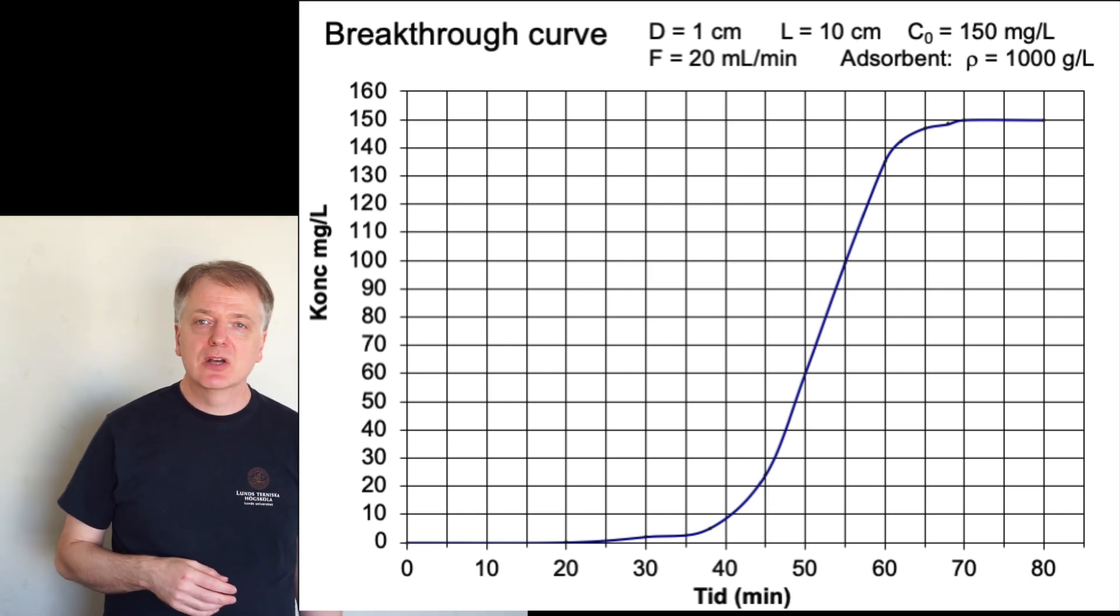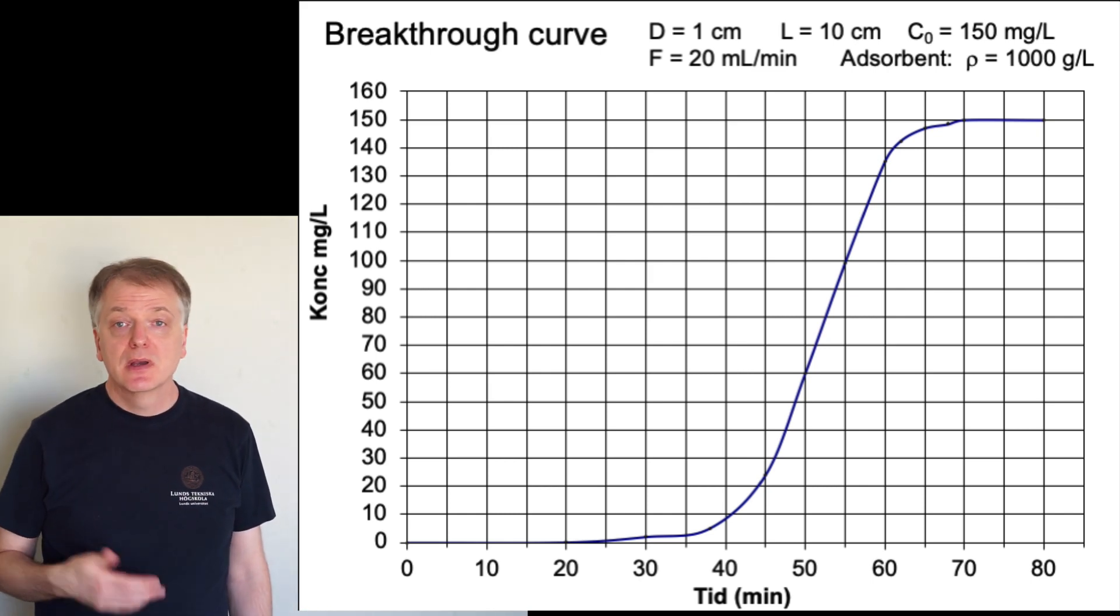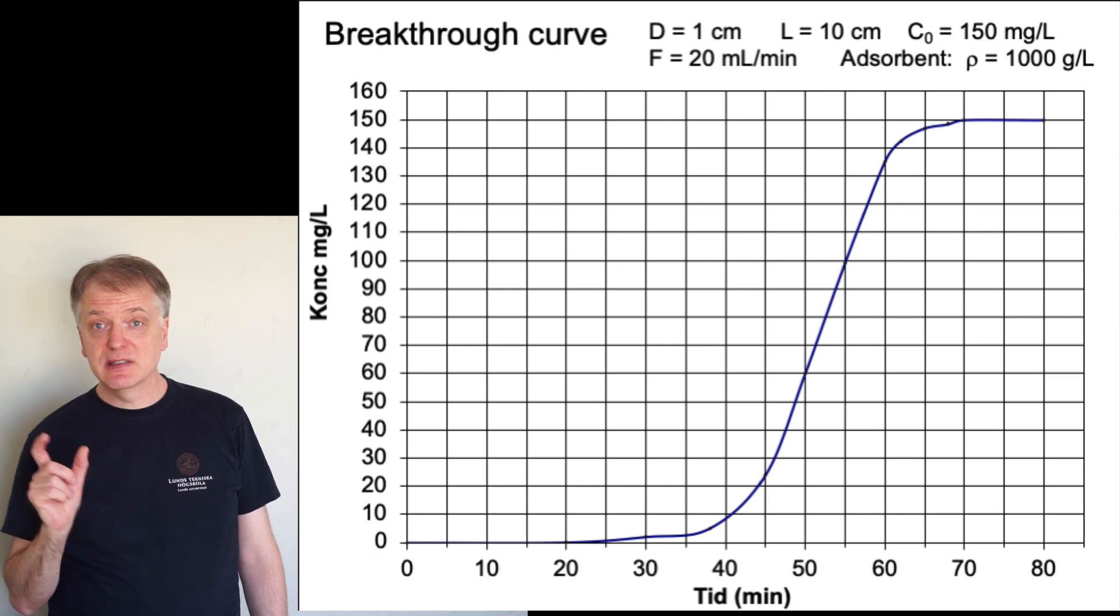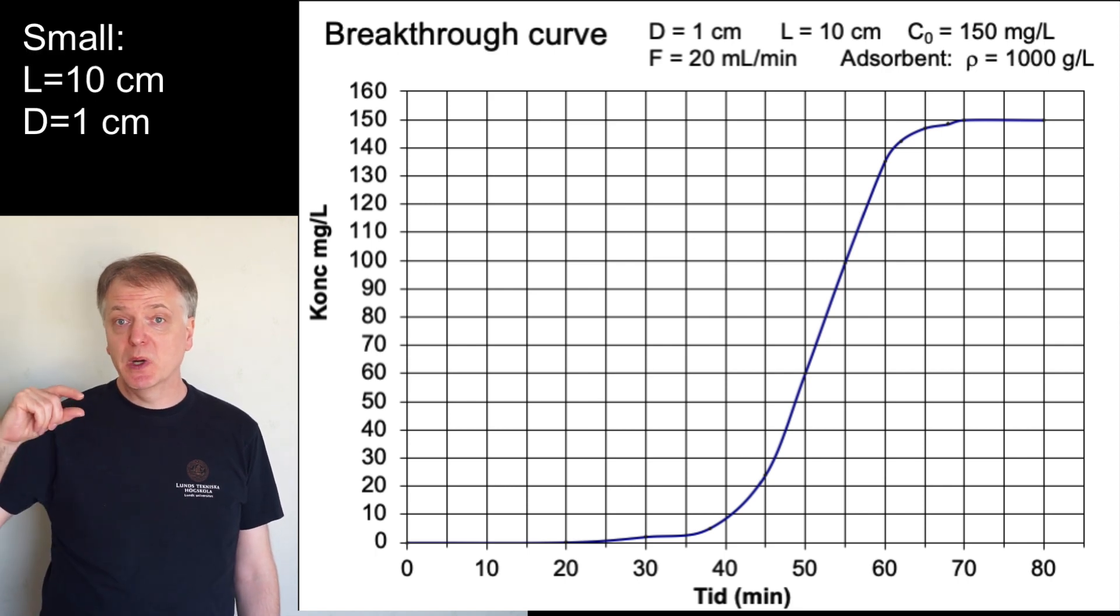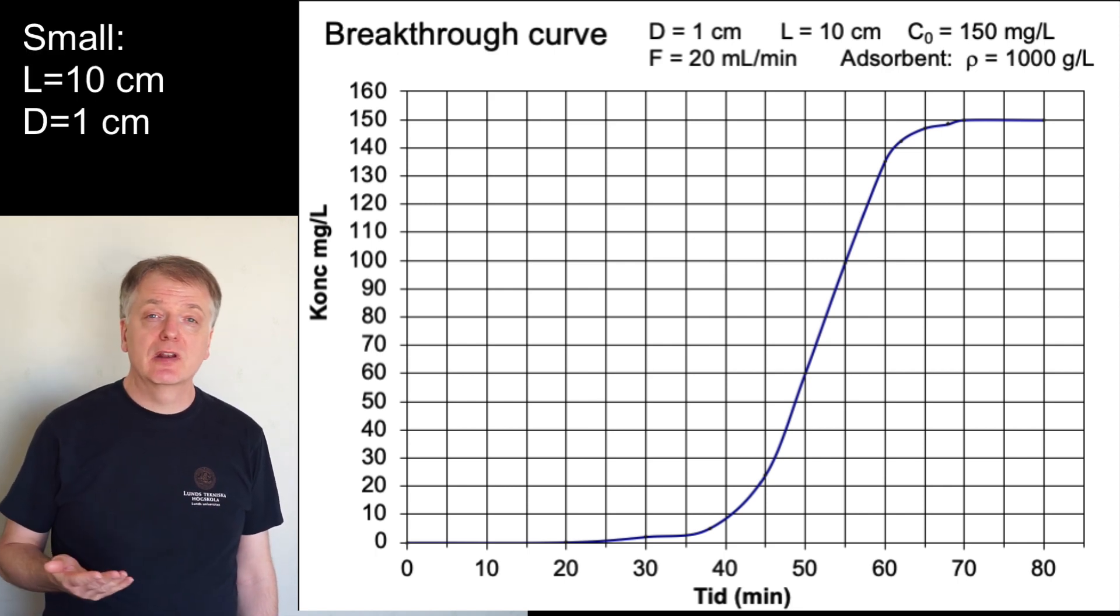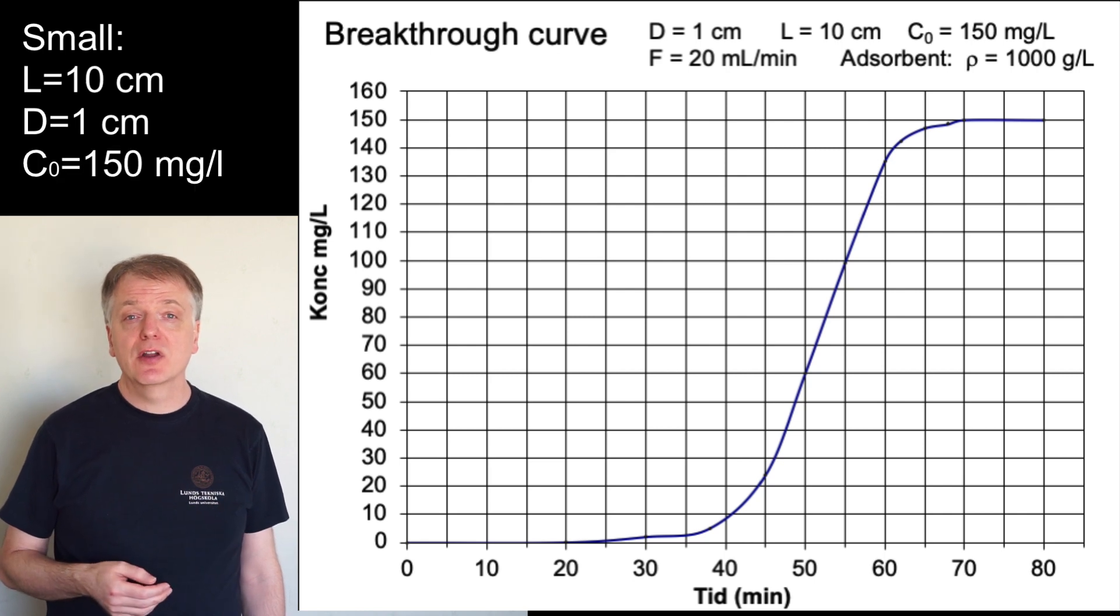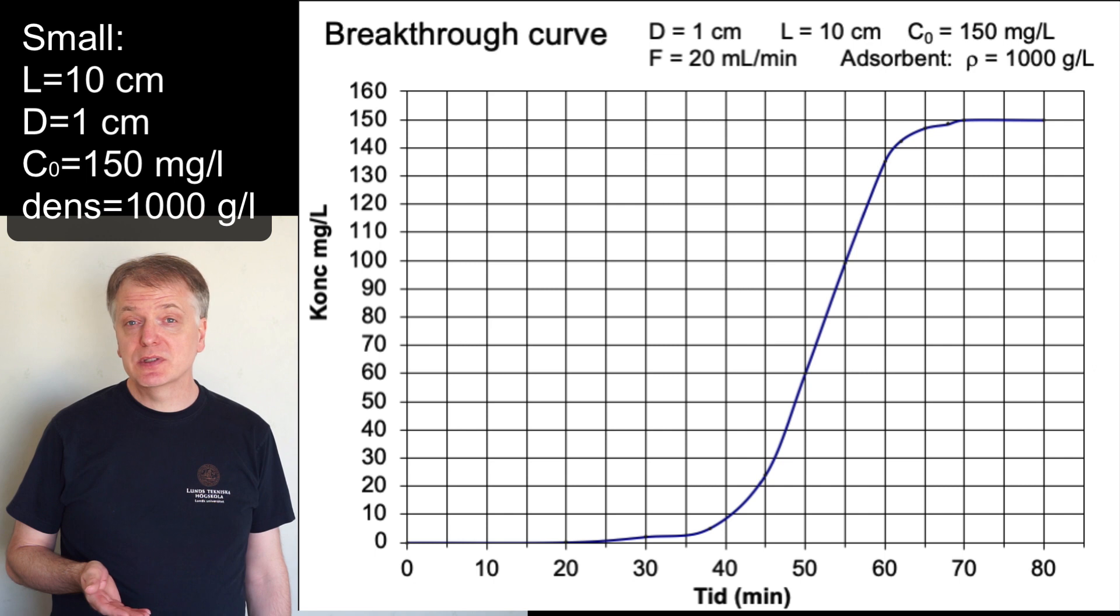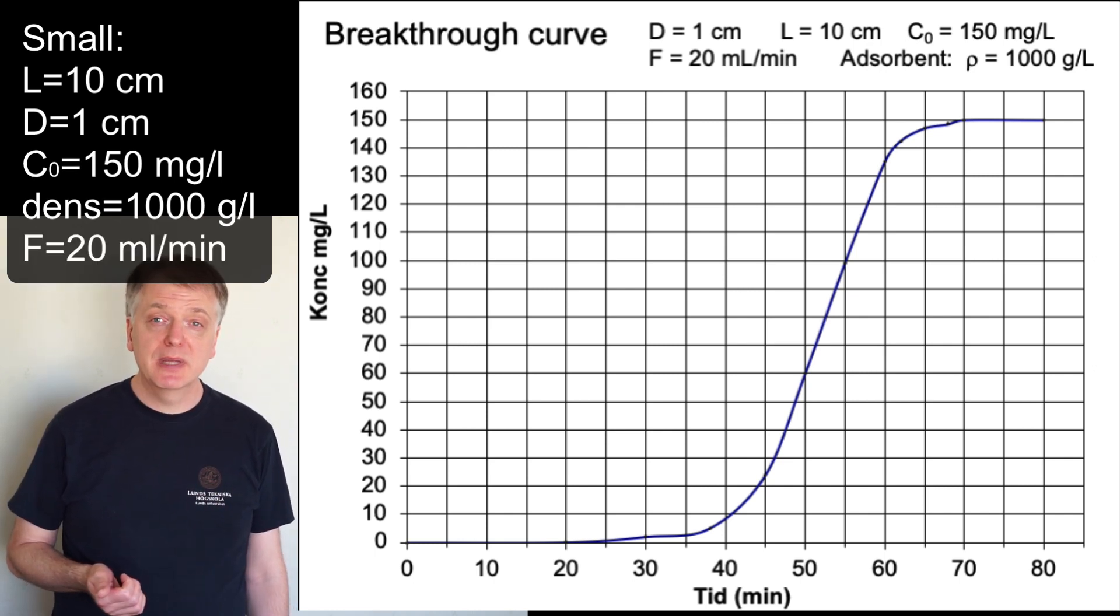Let us do an example with upscaling of an adsorption column. A small scale experiment using a 10 cm long column with a diameter of 1 cm is fed with an inflow with a concentration of 150 mg per liter. The density of the adsorbent is 1000 g per liter and the feed flow rate is 20 milliliters per minute.